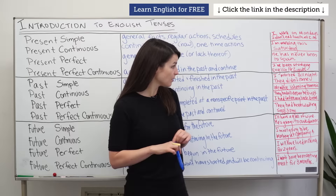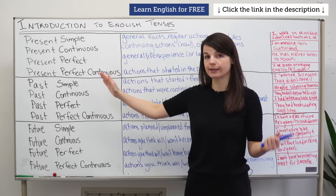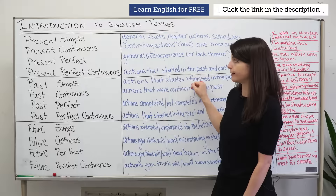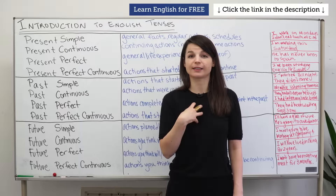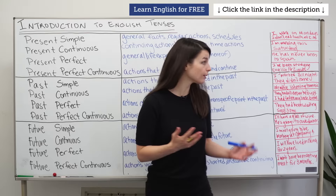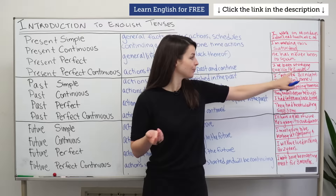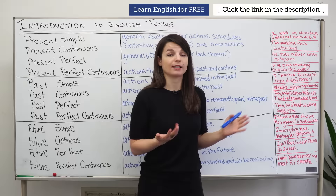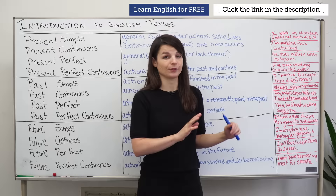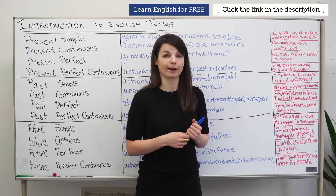Let's move on to the second group: the past tense. The first one is the past simple tense, used for actions that started and finished in the past. For example, 'I taught simple present tense earlier' — that action started and finished. 'I worked all night.' A negative: 'They didn't come to the party' — the action was in the past and it's over, it's finished.